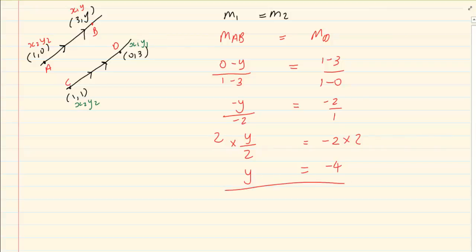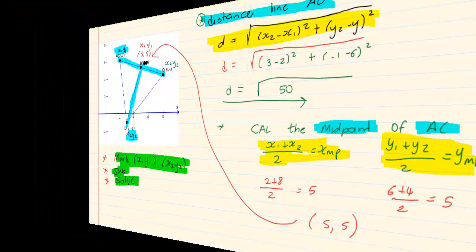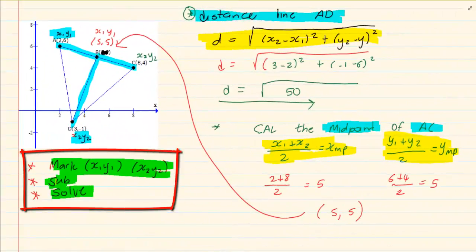Now, look at the rules. Number 1. We knew that they are parallel. We marked our x1s and our x2s. We substituted. And then we solved. So, the rules are exactly the same. It is always the same three rules. Mark, substitute, solve.